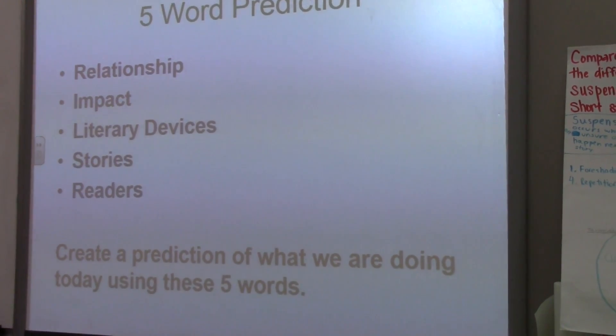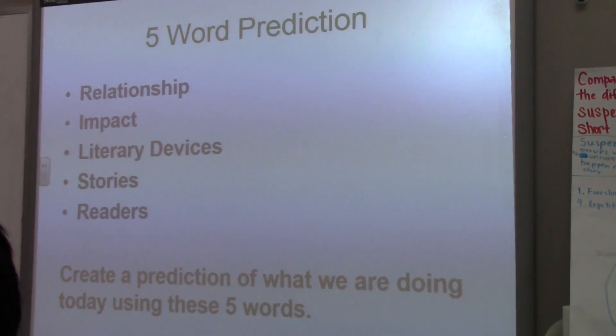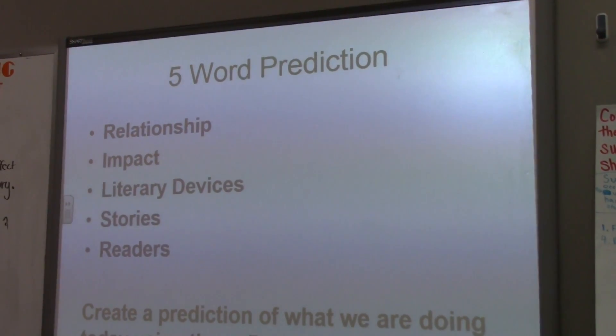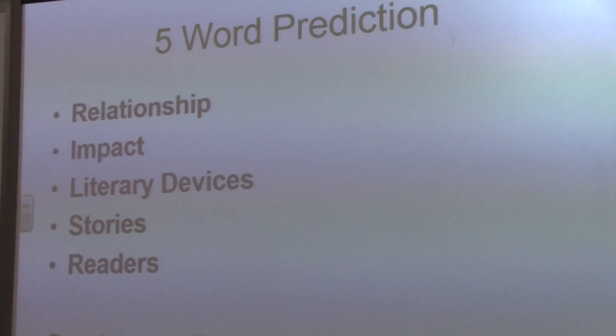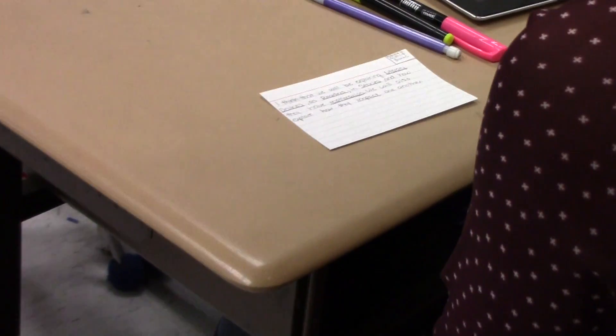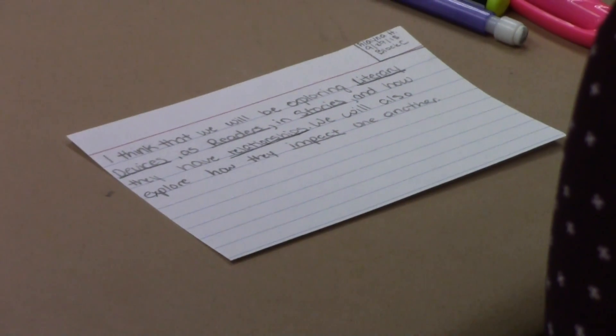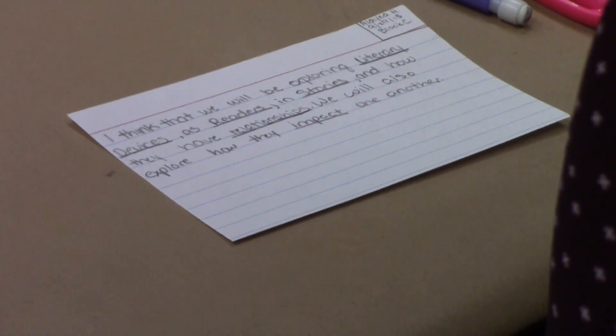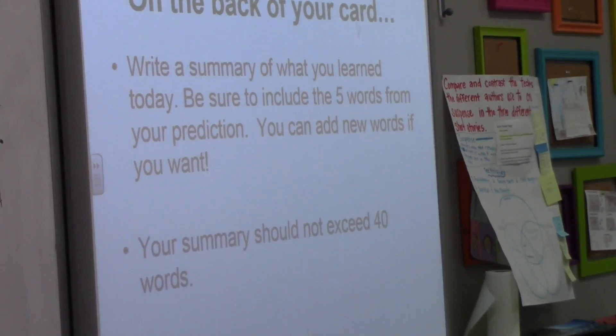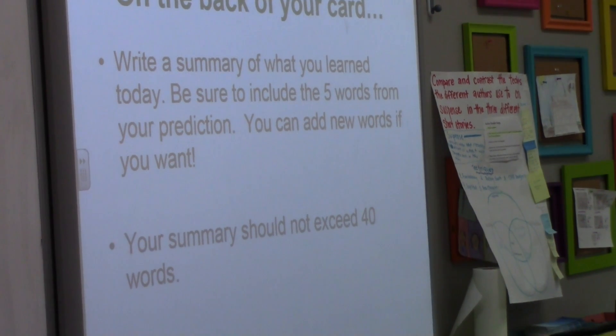At the beginning of this lesson I started with a five word prediction. For their bell work I said: create a statement — a prediction of what we're going to do today, what you're going to learn today — using these five words. I knew there was a relationship between the five words but they didn't know that. I gave them an index card and they wrote that prediction on it, then we put it away until the very end.